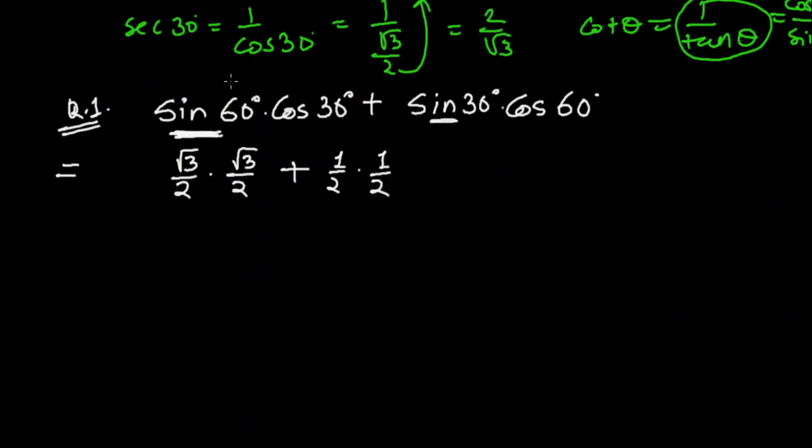Let me solve this further. Root 3 times root 3 will be 3, and 2 times 2 is 4. Again, 1 times 1 is 1, and 2 times 2 is 4. So 3 upon 4 plus 1 upon 4.